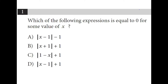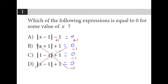Which of the following expressions is equal to 0 for some value of x? If we set these all equal to 0, you have to solve so that the absolute value bracket is all by itself, which means you'll add 1 to both sides here, and for the other three you'll subtract 1. The problem with that is the definition of absolute value is that it's distance from 0, and distance cannot be negative. So all of these would be negative — not possible. That's why A is the answer.